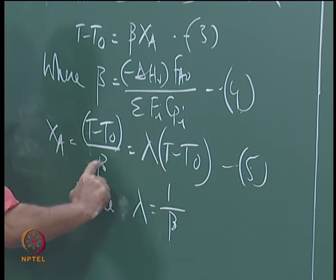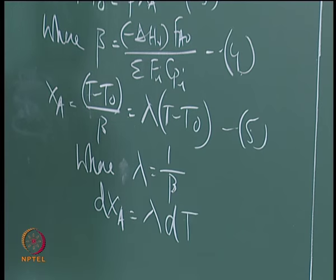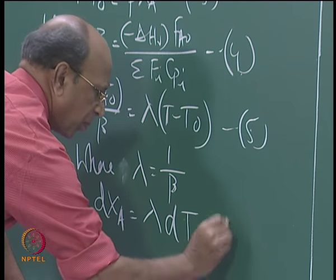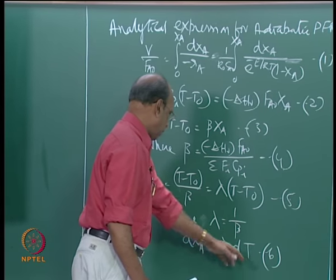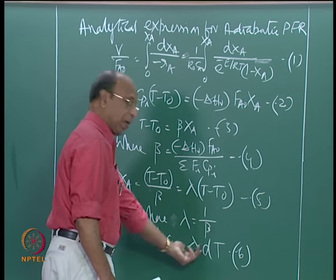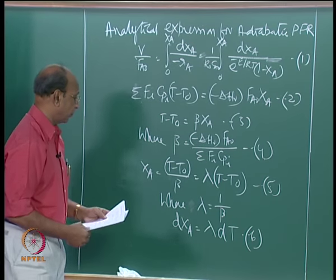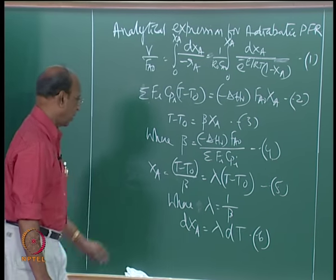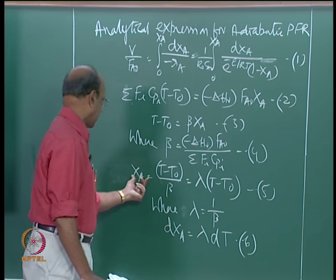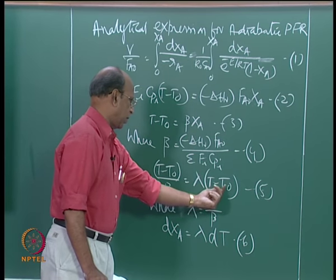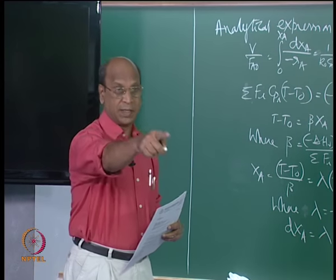From the same expression, I can substitute X_A = lambda*(T − T_0), taking X_A0 equal to 0. In the earlier derivation we also had X_A0 in the expression, where alpha equals lambda*E divided by (1 − X_A0), and with X_A0 equal to 0 that does not change anything.